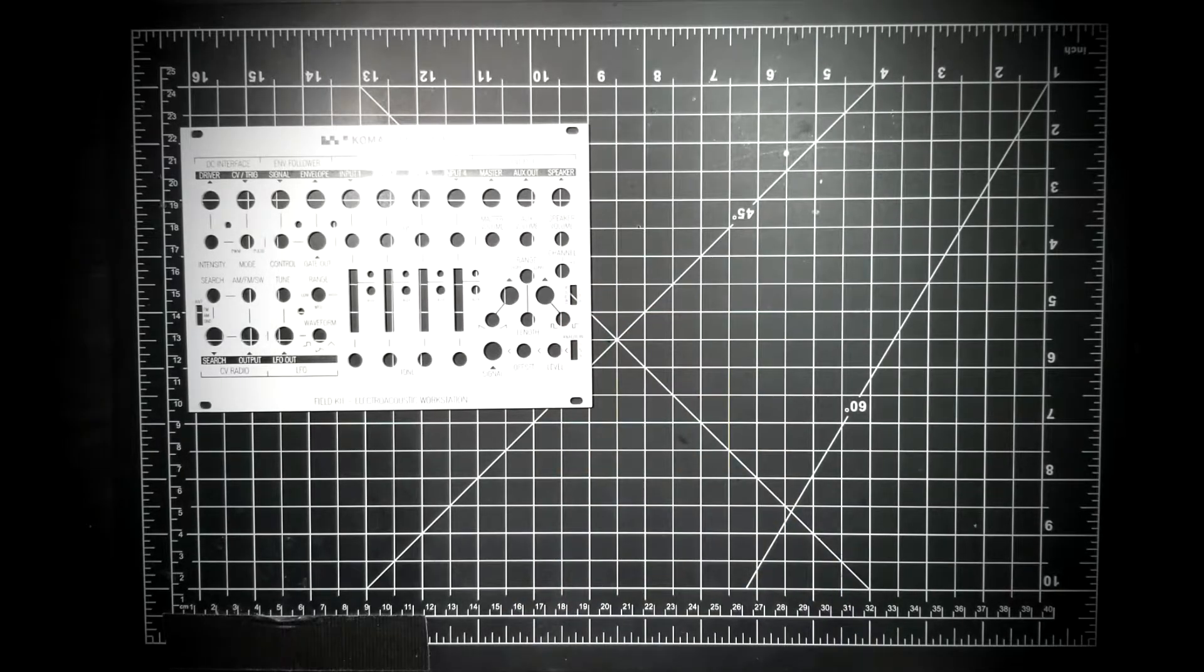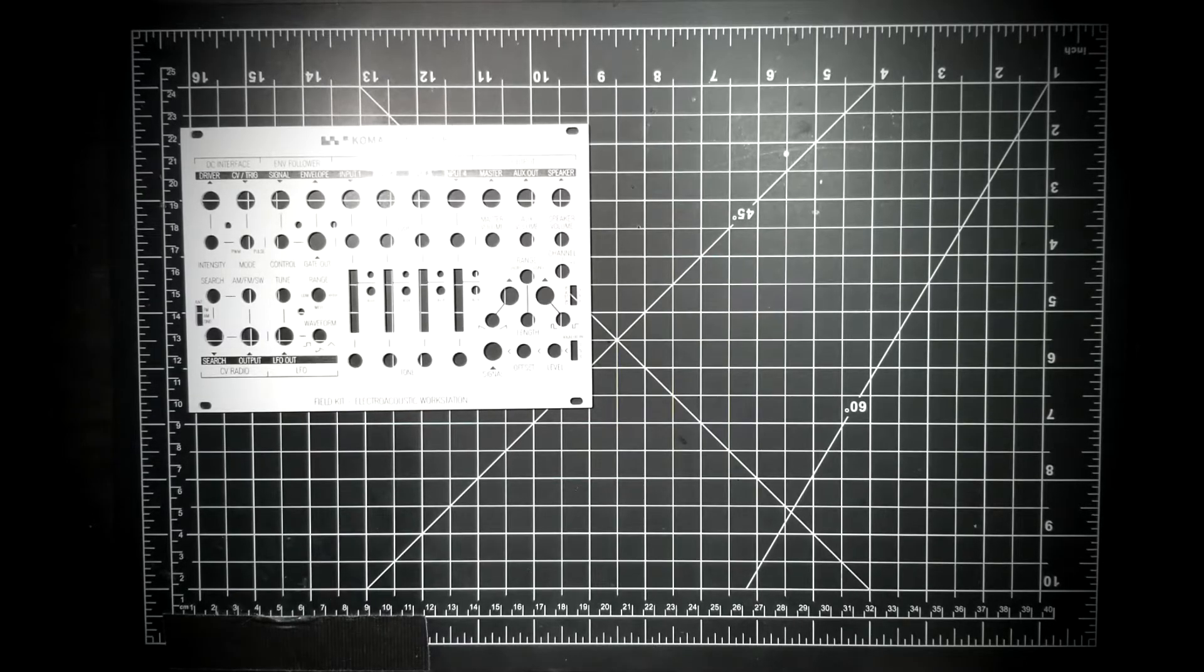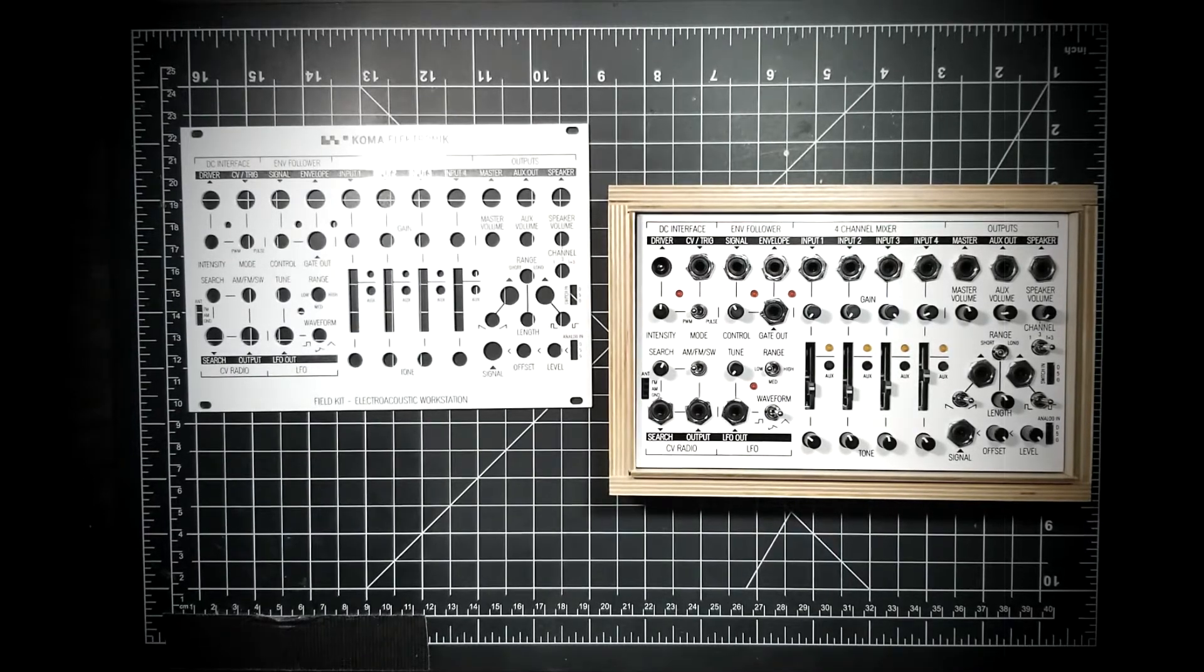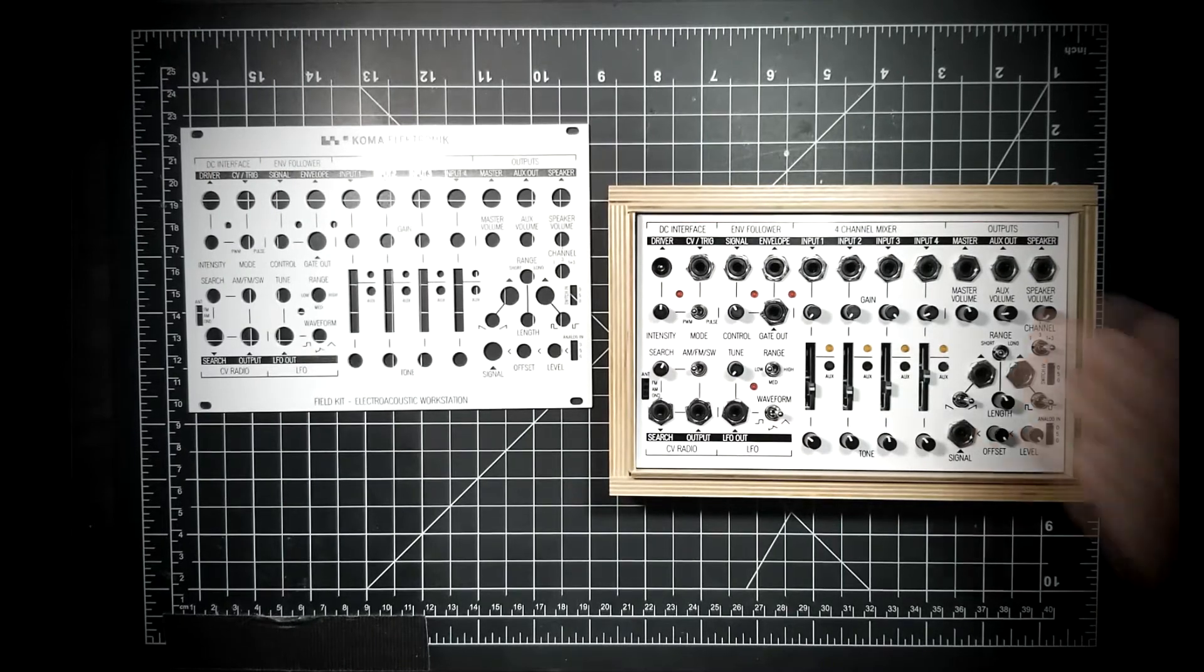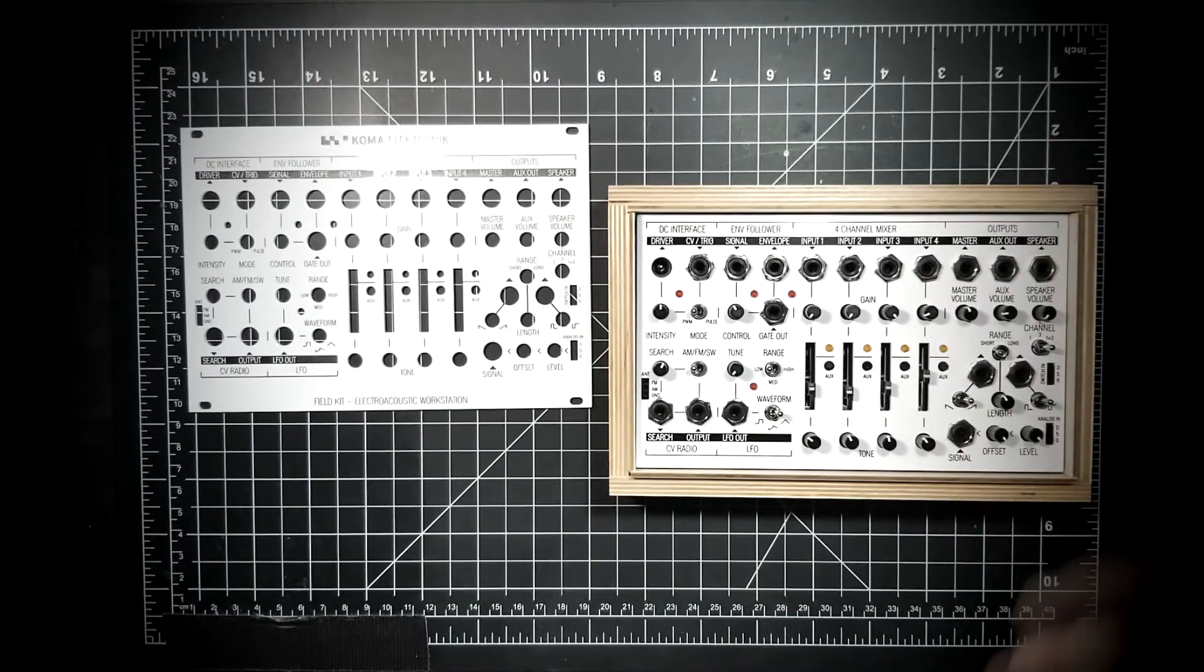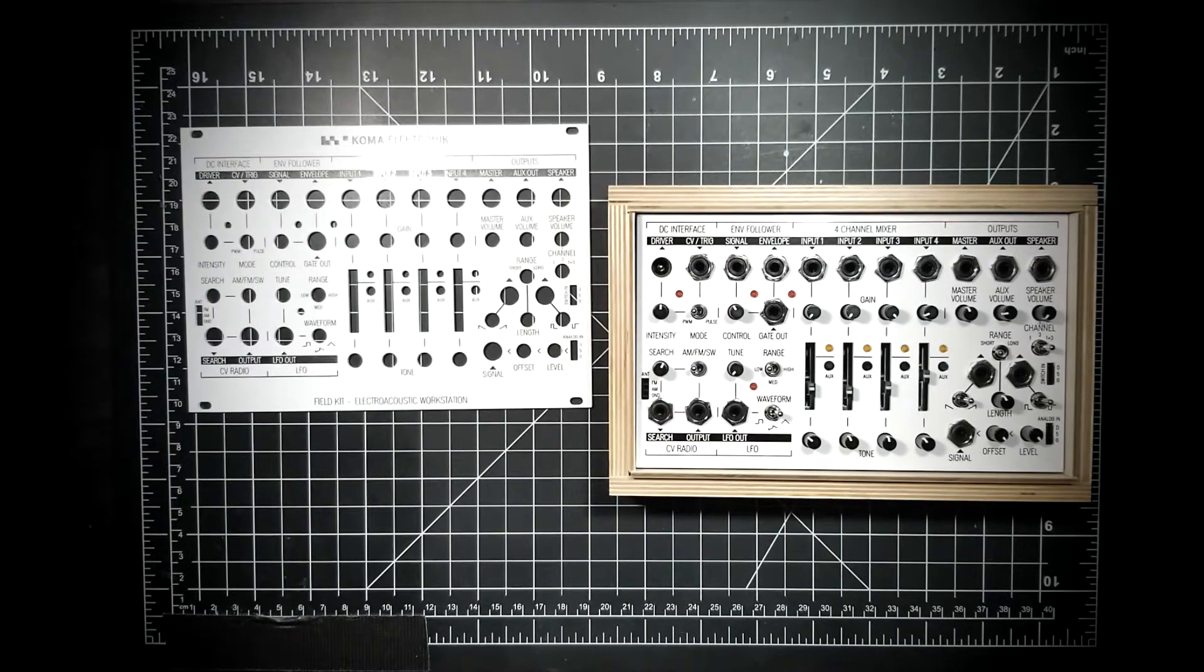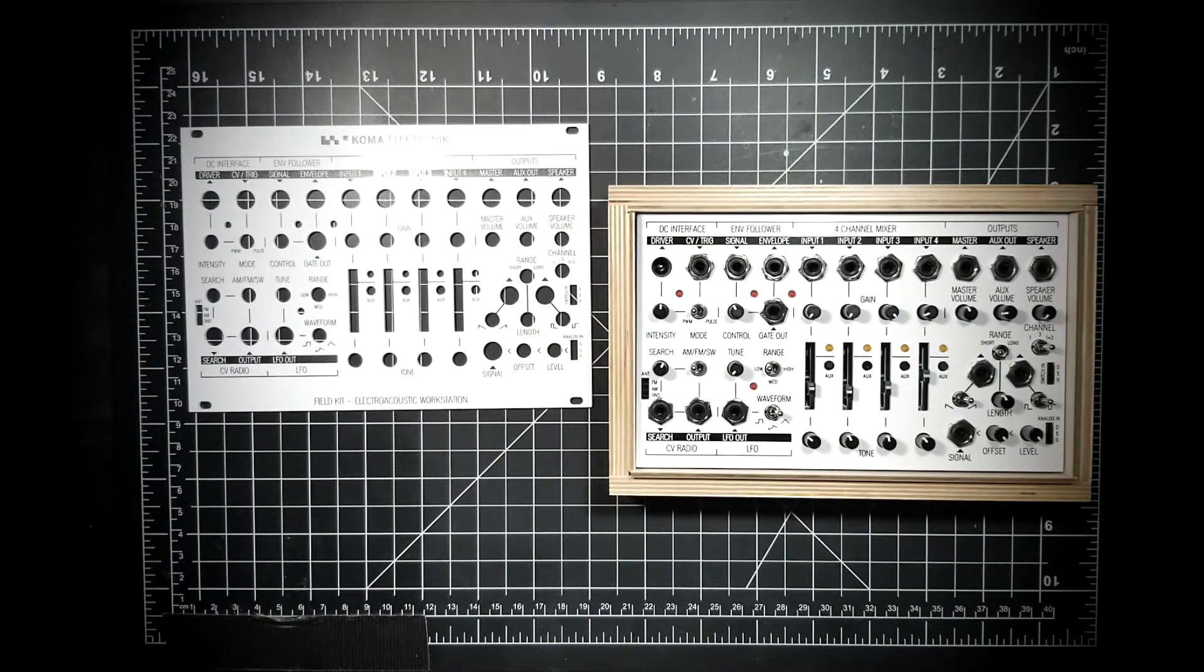This is a Eurorack panel. Designed by Koma, it allows for the removal of the Field Kit from its wooden box and for it to then be reinstalled into a larger Eurorack system. And in this video, we'll be looking at the pretty simple process of converting the Field Kit to the Eurorack-sized panel, hopefully in an uncomplicated way to maybe give you some assistance and even confidence to make this modification yourself.